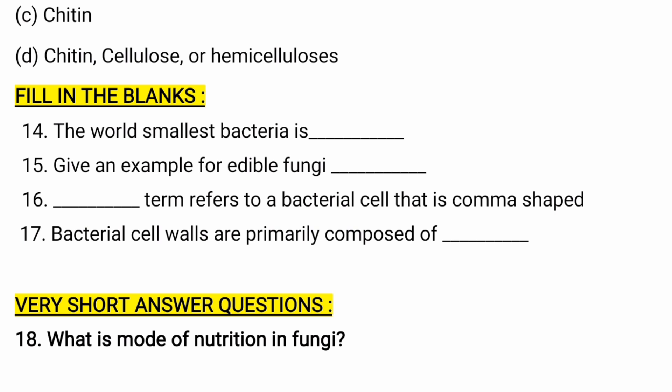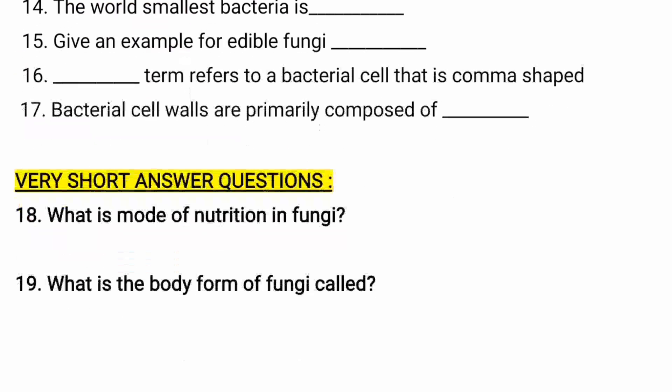Give an example of edible fungi — mushrooms are the edible fungi. The term referring to a comma-shaped bacterial cell is vibrio; comma-shaped bacteria are generally referred to as vibrio. Bacterial cell walls are primarily composed of peptidoglycan layer.